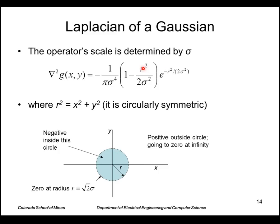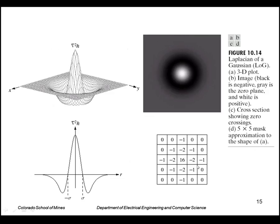To note, it's symmetrical, so it just depends on r, which is where r squared is equal to x squared plus y squared. So it's circularly symmetrical. At locations of r near zero, it's negative. The operator is zero where r is equal to square root of two times sigma. And then for r greater than that, it's positive and eventually goes to zero at infinity.